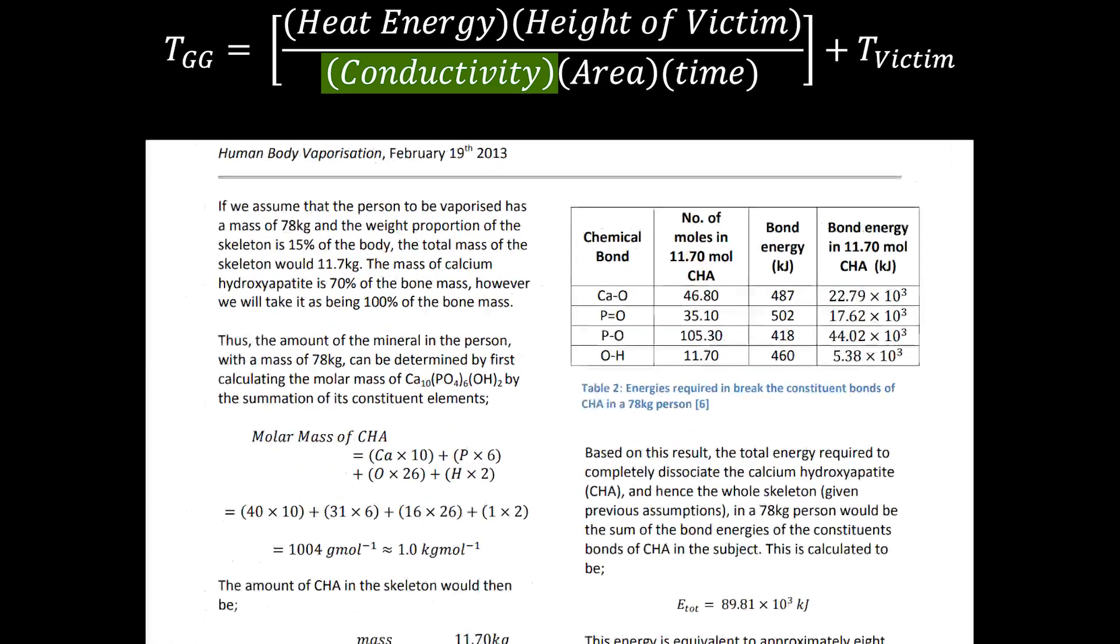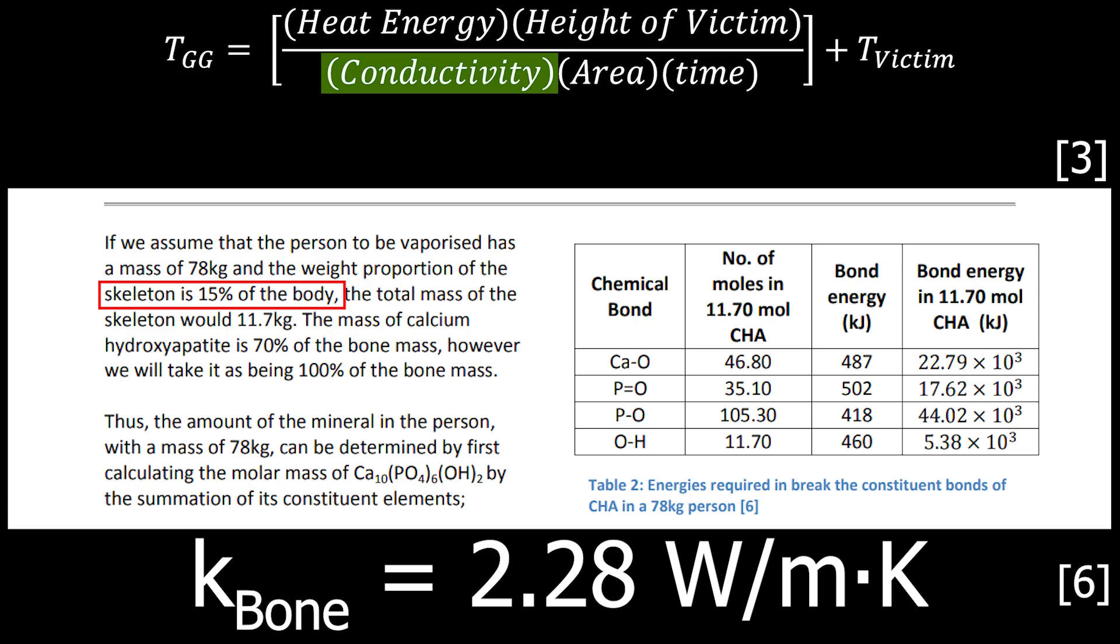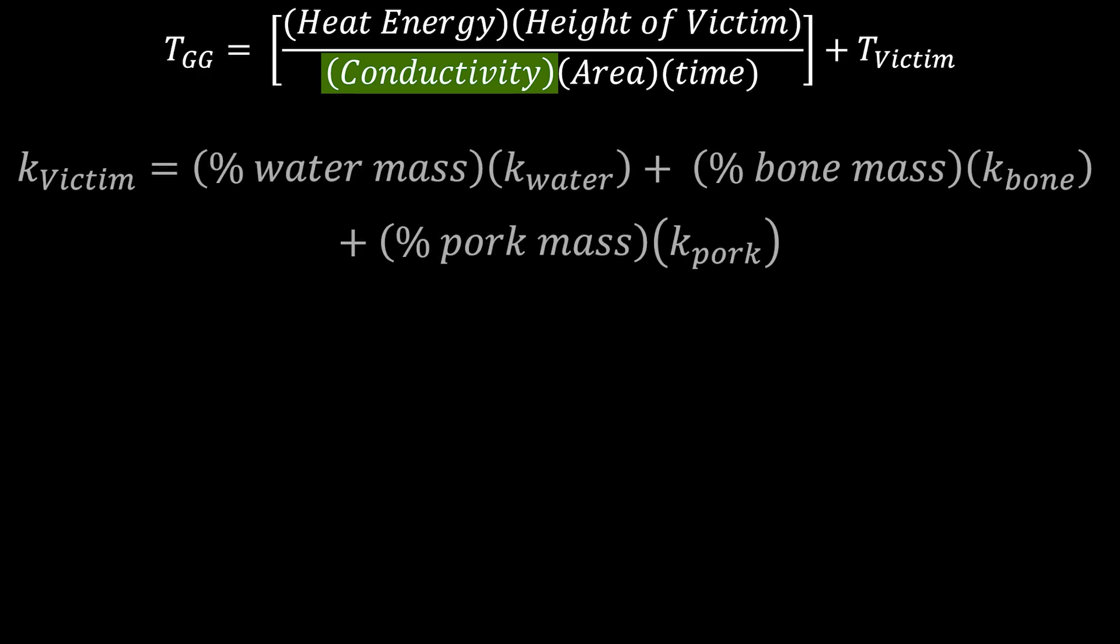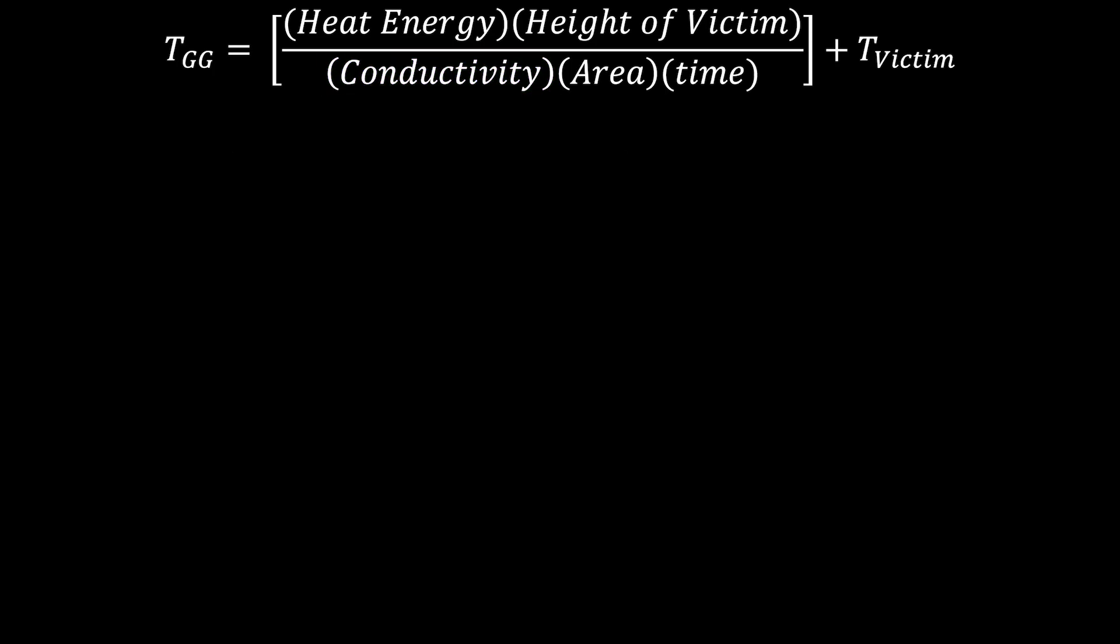Finally, we're left with the bones, which make up about 15% of the body's mass, and have a conductivity of about 2.28 watts per meter Kelvin. We plug all of this into our equation, and we get a total conductivity of the human body of about 0.831 watts per meter Kelvin. Great.